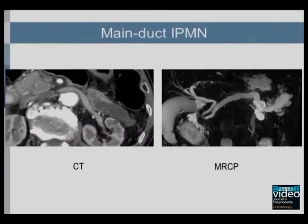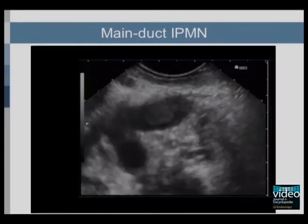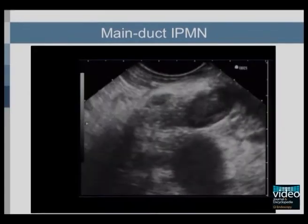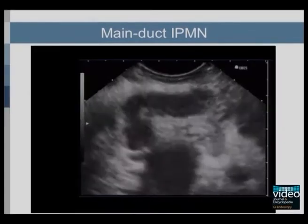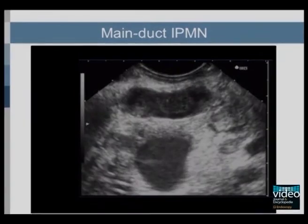In main duct IPMNs, the main pancreatic duct is cystically dilated, as can be seen on CT and MRCP. On EUS, the main pancreatic duct is dilated with or without mural nodules and intraluminal debris or mucus.